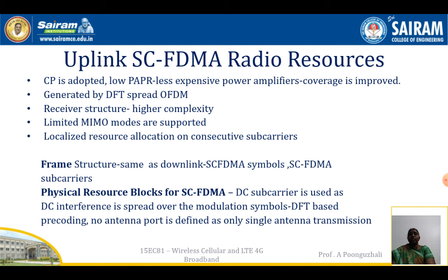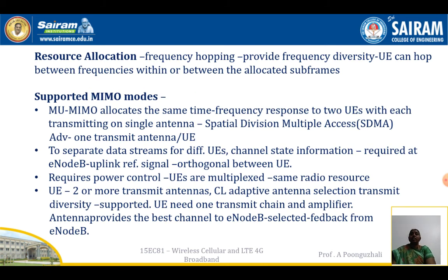Since SC-FDMA uses single antenna transmission, there is no antenna port diversity. Resource allocation for SC-FDMA uses frequency hopping, which provides frequency diversity. The UE can hop between frequencies either within the allocated subframes or between subframes, enabling data transfer through inter-subframe or inter-frame frequency hopping.